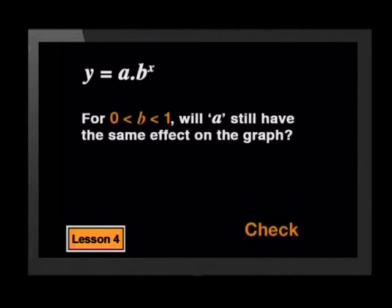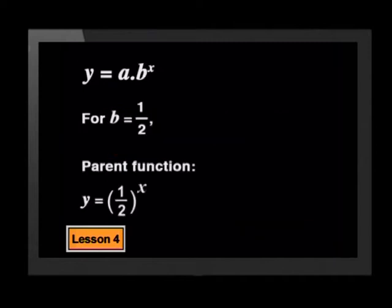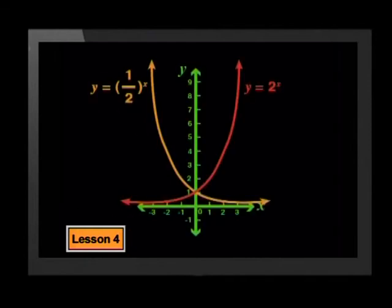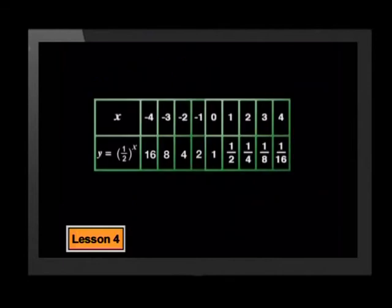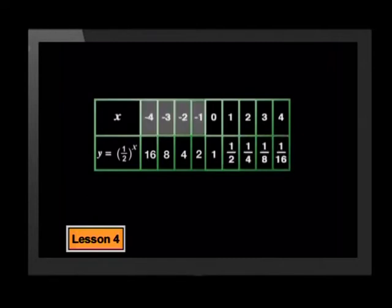But we need to check whether a will still have the same effect if we use base values that are greater than 0 but less than 1. Let's use a base value of one half. The parent function becomes y equals one half to the power of x. As we saw in the previous lesson, this parent graph is a reflection about the y-axis of the parent graph of 2 to the power of x. Using a table of values, for x-values greater than 1 we get fraction values for y, and for negative x-values we get y-values greater than 1. The a-value for this function is 1.